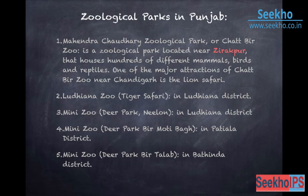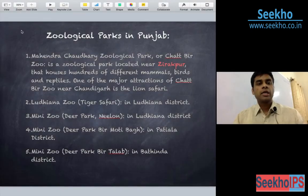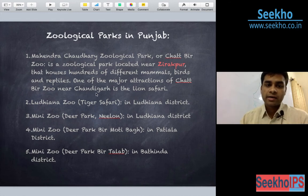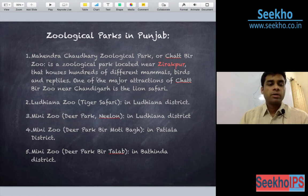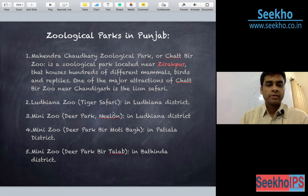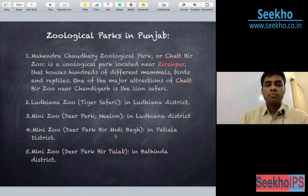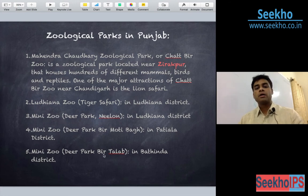These are the zoological parks in Punjab. Since childhood I have been hearing one name — Chattbir Zoo. This Mahindra Chaudhary Zoological Park, or Chattbir Zoo, is a zoological park near Zirakpur, where different mammals, birds and reptiles may be seen. Another zoological park is Ludhiana Zoo, where a tiger safari is located. Also in Ludhiana district, there is another mini zoo. In Patiala, Deer Park Beed Murtibag is there. In Bathinda, Deer Park Beed Talab is there.